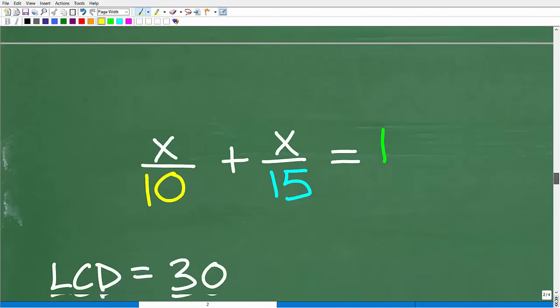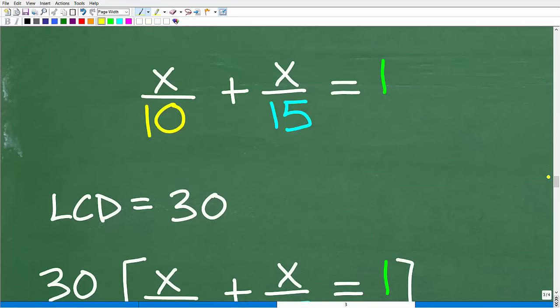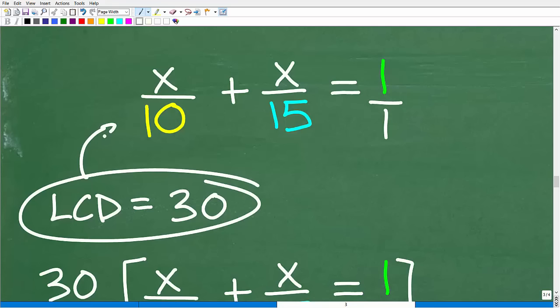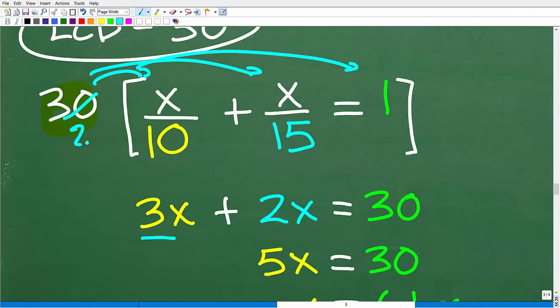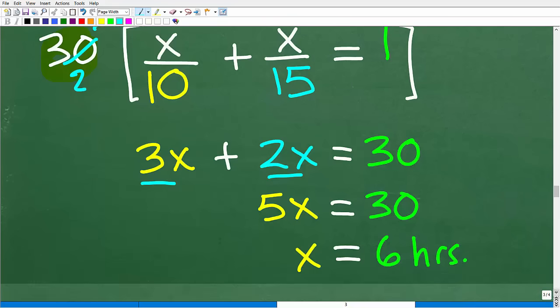X over 10 plus X over 15 is equal to 1. What is the LCD? This is the best way to solve this. The LCD here is 30. That's the lowest common denominator. So we could just multiply the entire equation by the LCD. And when we do that, we have 30 times X over 10. So 10 goes into 33. So this is going to be 3 times X or 3X. And of course, remember, we're using the distributor property here. Let me just not go so quick here. I know a lot of you are maybe saying, slow down, Mr. YouTube Math Man. So 30 times X over 15. 15 goes into 32. So that's 2X. And now 30 times 1 is 30.